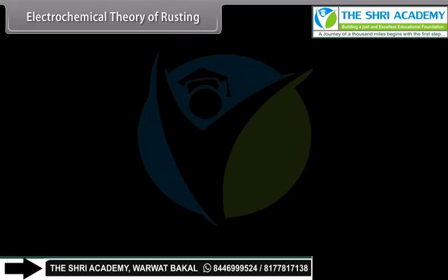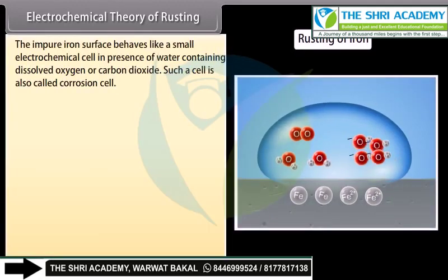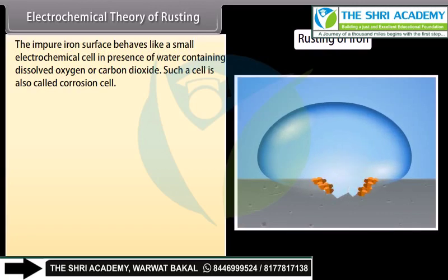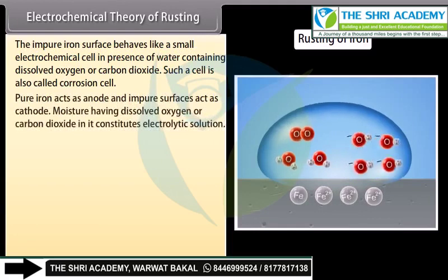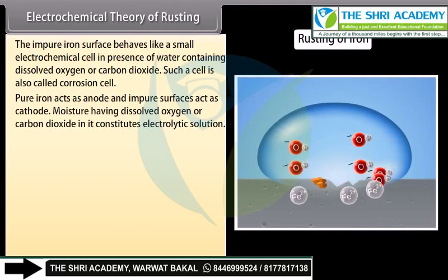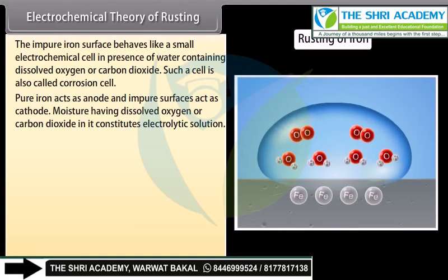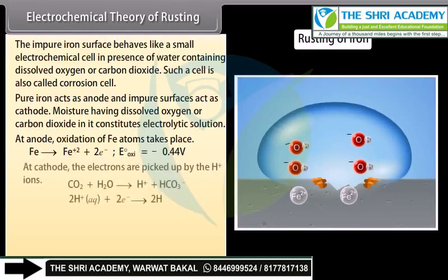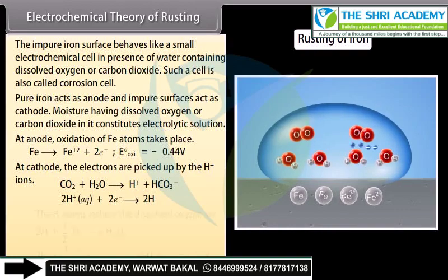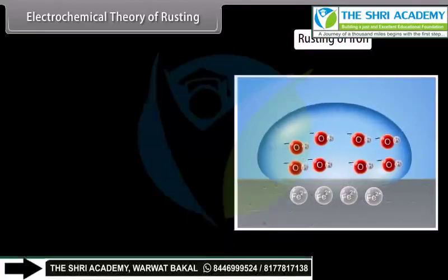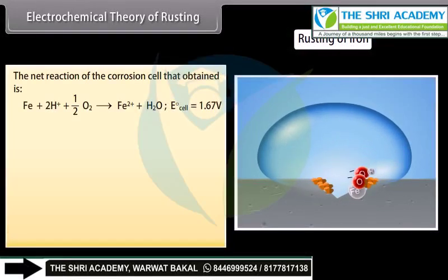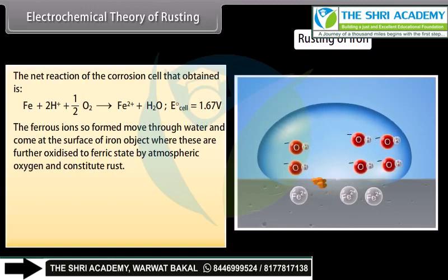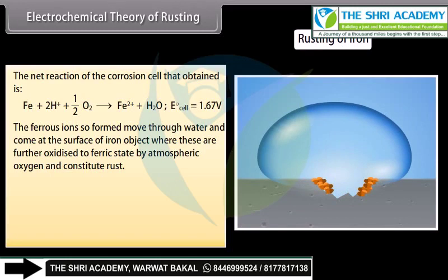According to the electrochemical theory of rusting, the impure iron surface behaves like a small electrochemical cell in the presence of water containing dissolved oxygen or carbon dioxide — also called a corrosion cell. Pure iron acts as the anode and impure surfaces act as the cathode. Moisture having dissolved oxygen or carbon dioxide constitutes the electrolytic solution. At the anode, oxidation of iron occurs. At the cathode, electrons are picked up by H⁺ ions, and hydrogen atoms reduce the dissolved oxygen. The ferrous ions formed move through water to the surface of the iron object, where they are further oxidized to the ferric state by atmospheric oxygen and constitute rust.